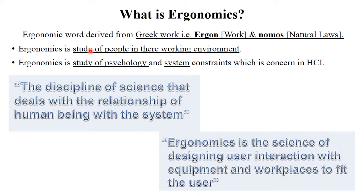There are many definitions of ergonomics but the meaning is the same. Ergonomics is a study of people in their working environment — how people work in their working environment. It is a study of psychology and system constraints concerned in HCI. It is also defined as the discipline of science that deals with the relationship of human beings with the system — how exactly a human handles each and every part of the system like keyboard, mouse, monitor, etc.